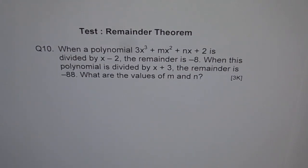Question 10. When a polynomial 3x³ + mx² + nx + 2 is divided by x - 2, the remainder is -8. When this polynomial is divided by x + 3, the remainder is -88. What are the values of m and n?